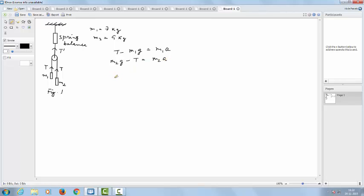Adding these two equations, we get G into M2 minus M1 equal to A times M1 plus M2. So, this gives us A equal to M2 minus M1 divided by M1 plus M2 into G.